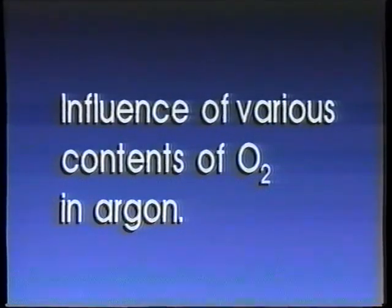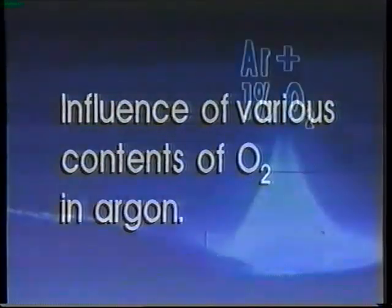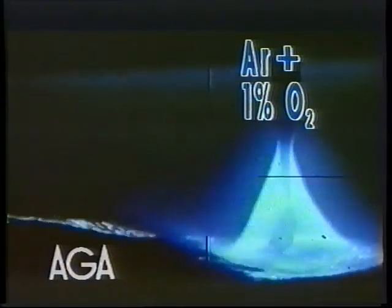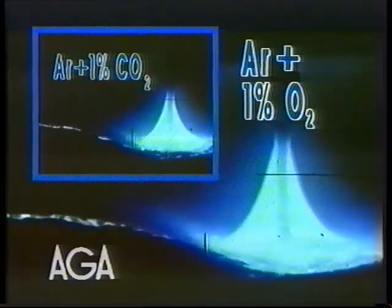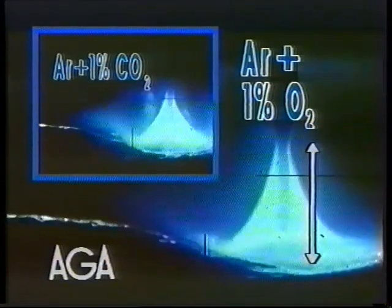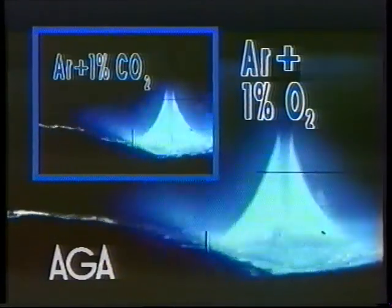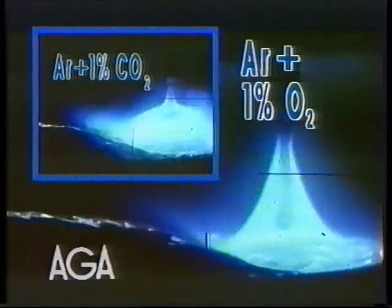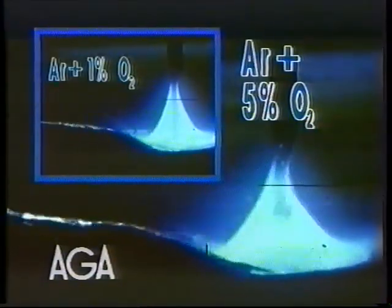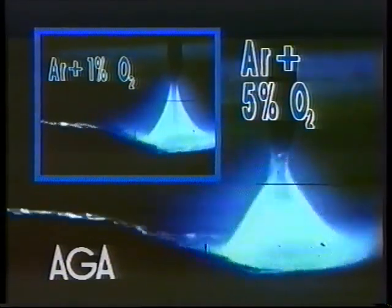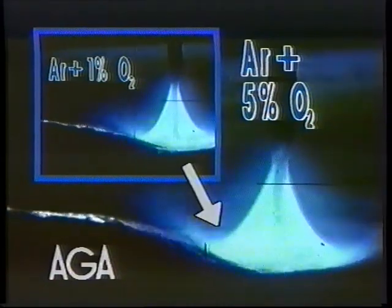This part will show metal transfer with increased contents of oxygen in argon. 1% oxygen in argon resembles 1% carbon dioxide in argon, with a long liquid column and low pressure on the weld pool. The liquid column is a little shorter with 5% oxygen in argon, and the pressure on the weld pool is still low.